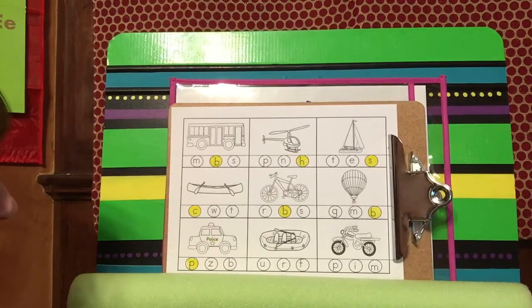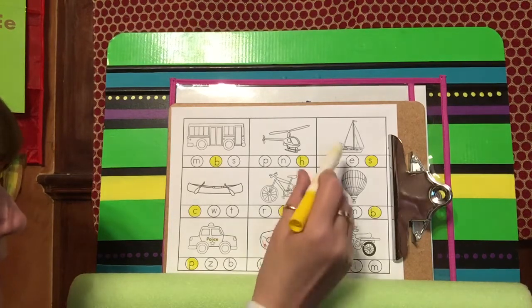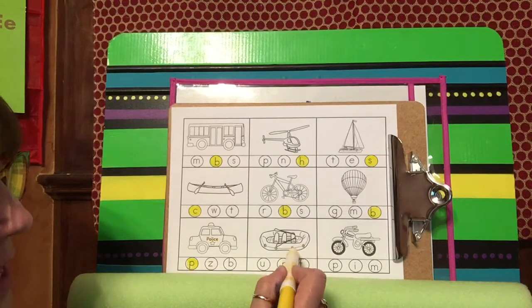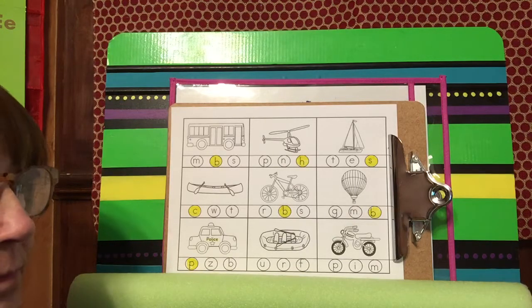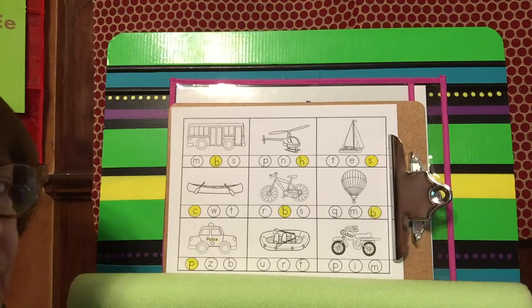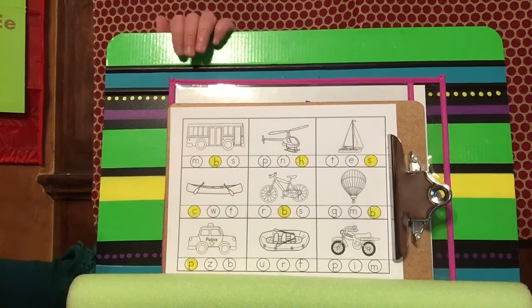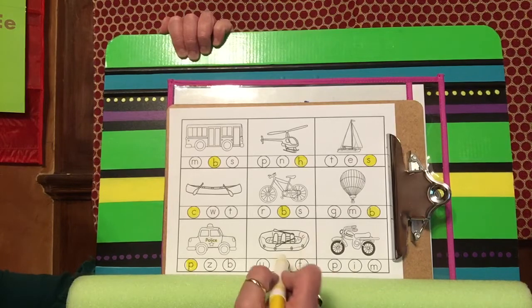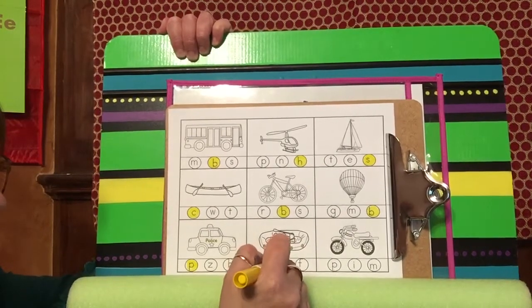This one right here, we've had a couple different kinds of boats. This right here is called a raft. Raft starts with the rrr sound. Which one of our letters makes rrr? I think you know it. I'll give you a second. Shout it out. And it is our R for raft, so I'm gonna color R.